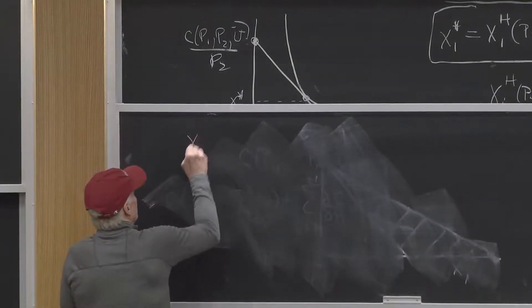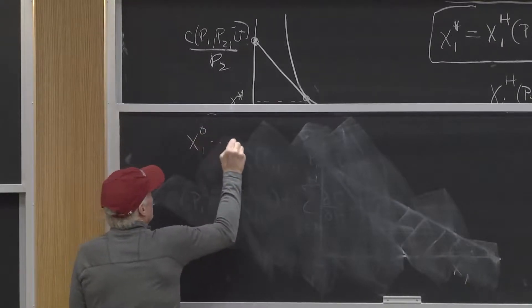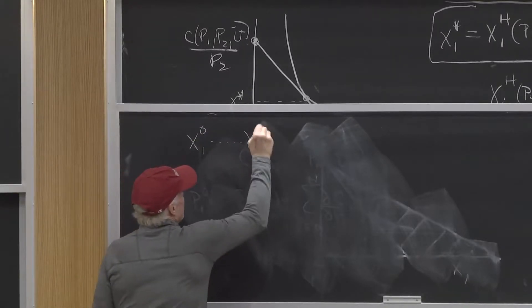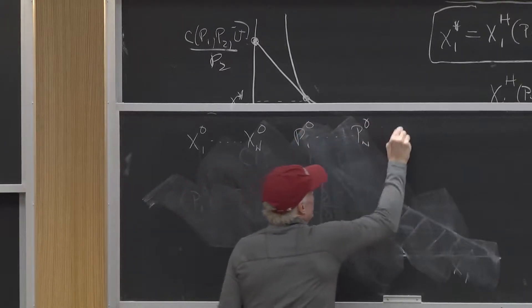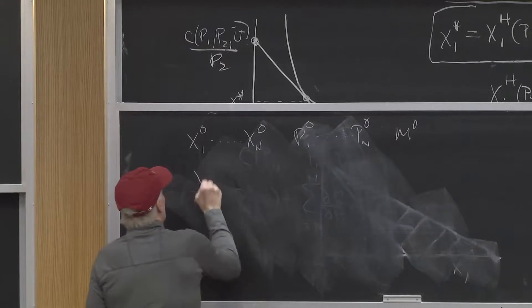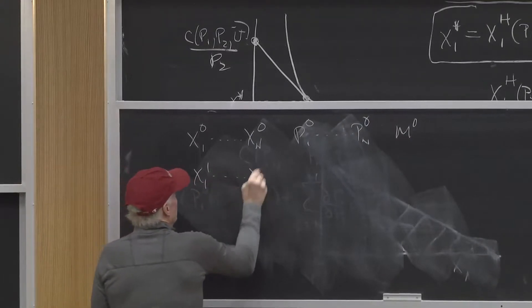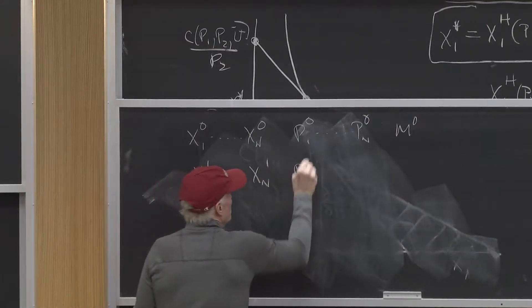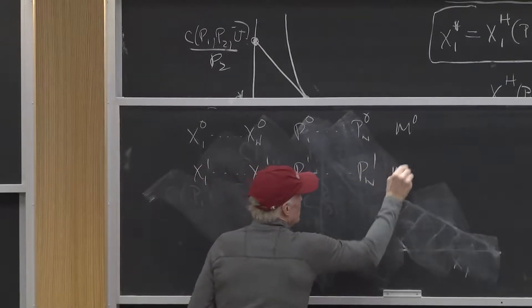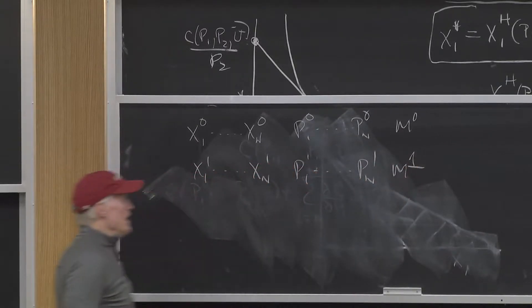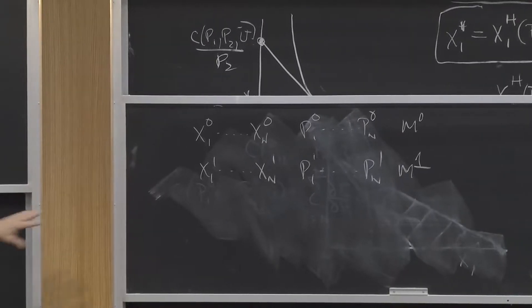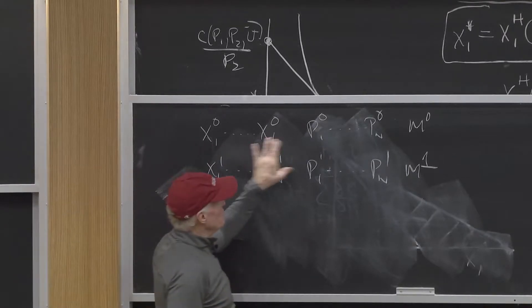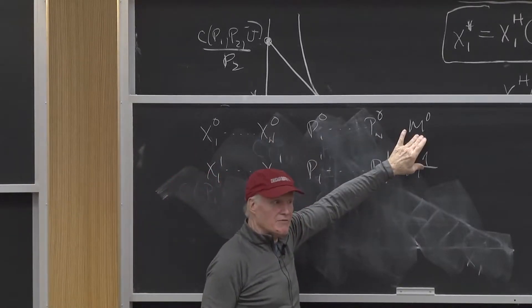I got two time periods. I got x1 naught up to xn naught, p1 naught up to pn naught, m naught. So that's my data. I got period zero or condition zero where we consume this mix of goods at these prices and this income level.